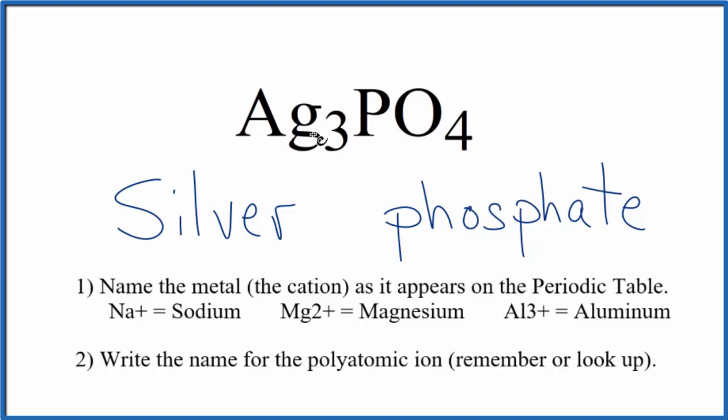We said that silver is a transition metal. Silver is almost always 1+, that's its ionic charge. So the ionic charge on each one of these silver atoms is 1+. Because of that, sometimes you'll see a roman numeral I written between the silver and the phosphate, since silver is a transition metal. You'll see it both ways, though.